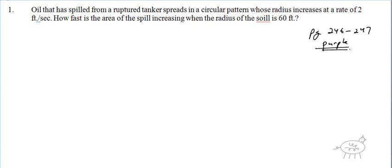Now that you've read it, let's start with this problem. Oil that has spilled from a tanker spreads in a circular pattern whose radius increases at a rate. Right off the bat, I see a couple of key words: it's increasing at a rate. That word 'rate' is significant because remember, derivative is change — change in position is velocity. So increasing at a rate of two feet per second means that's going to be some derivative, dr/dt. The radius is increasing at a rate of two feet per second, so dr/dt equals two feet per second.